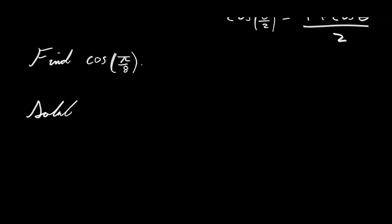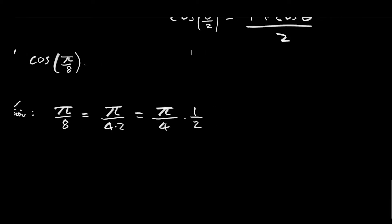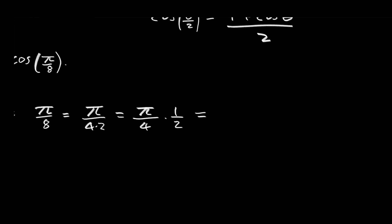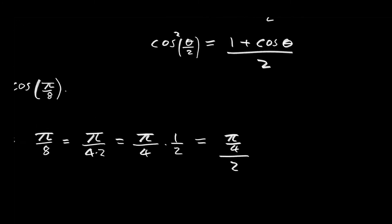Now π over 8 is not one of the special angles. But note that π over 8 is equal to π over 4 divided by 2 — we are halving π over 4. And now you can see that we have related π over 8 to one of the special angles, because π over 4 is one of the special angles. So now we can substitute this expression into the half angle formula, taking π over 4 to be our value for θ.